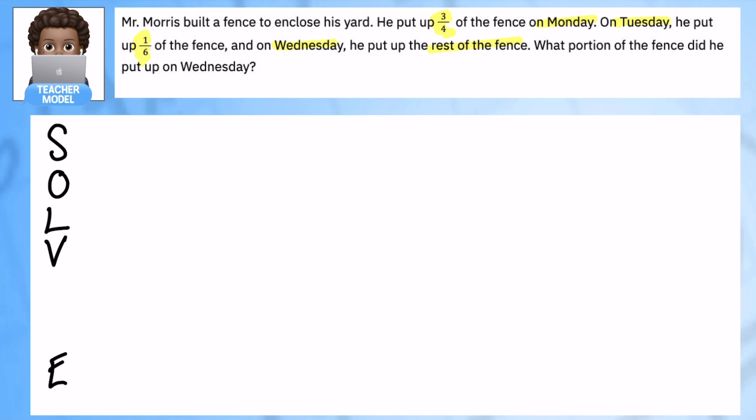I have the key numbers here. I know on three different days he puts up part of the fence, and I know the whole fence would be equal to one. So I want to know how much did he put up on Wednesday, or what fraction.